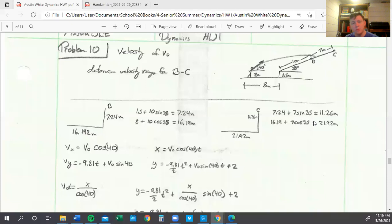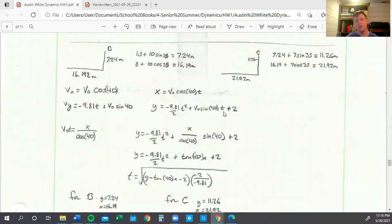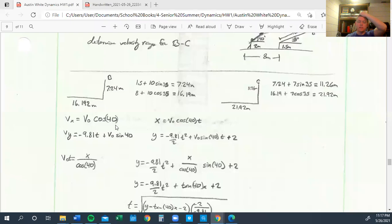On problem ten, we need to determine the velocity range for B to C. How fast can it go and hit B? How fast can it go and hit C? We split everything up into their individual Y and X coordinates. We'll do one for B and one for C because they're two different things. We find exactly what the distance is horizontally and vertically for both of those. We know VX is V naught cosine 40 because that's the angle he throws it at. Vertical components work the same way.